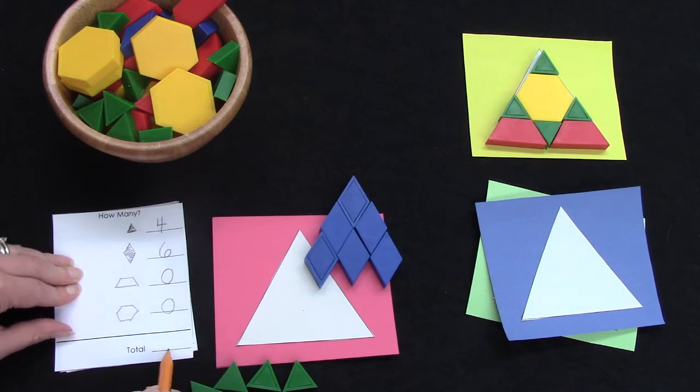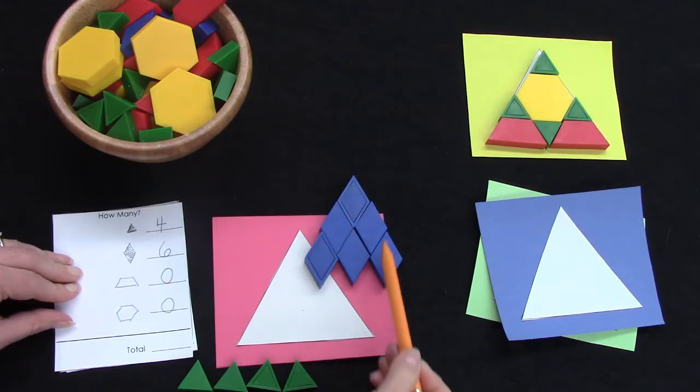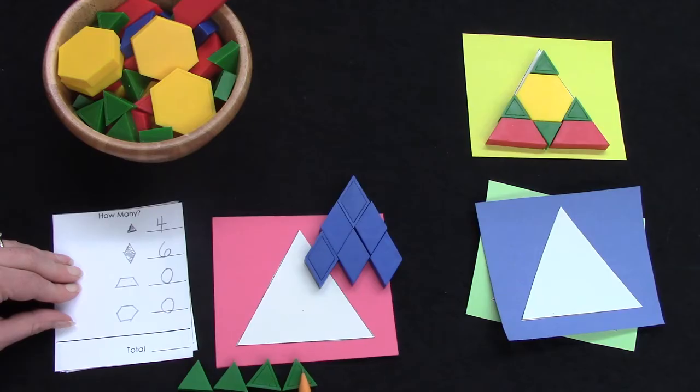What would my total be? How many shapes did I use in total? Six. I could just count six and then add on six, seven, eight, nine, ten.